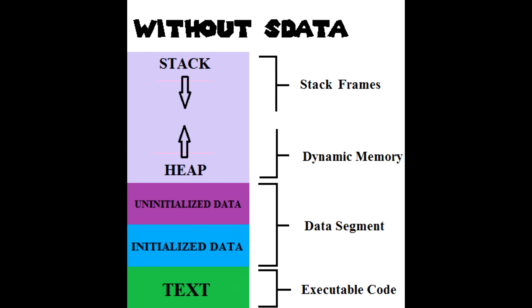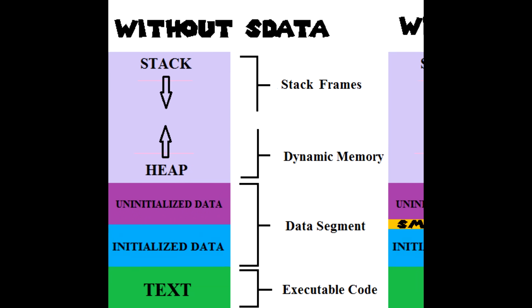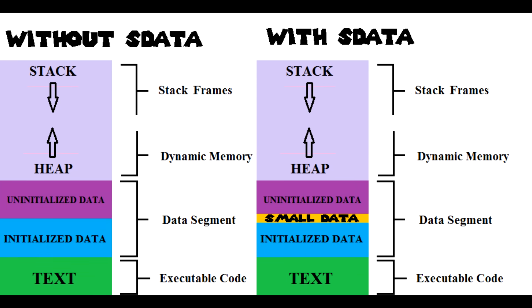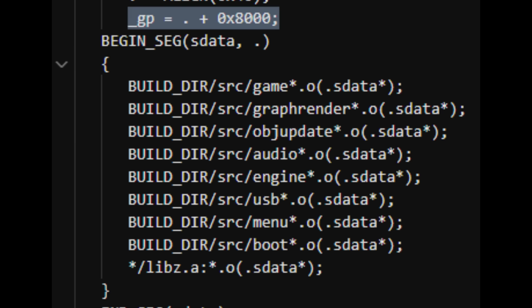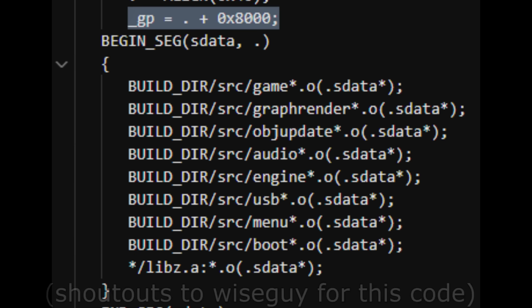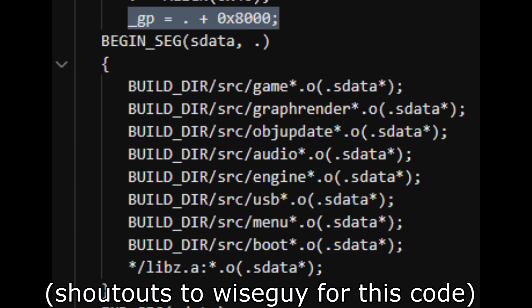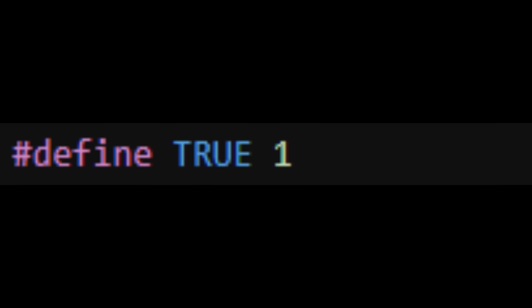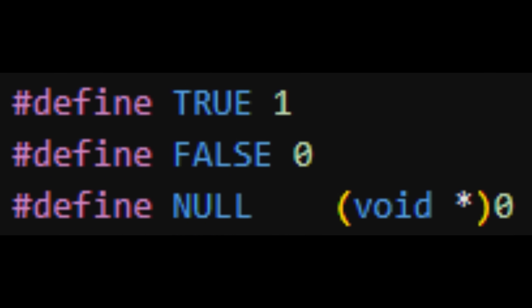For my next trick, I'll need to go on a tangent about S data first. I'm using a special register called the GP register as a pointer into a small data segment. This is a fairly common practice and it helps you read data in one cycle less on the N64. We all know true is defined as 1, false is defined as 0, and null is defined as 0. Surely there's no better way to do this.